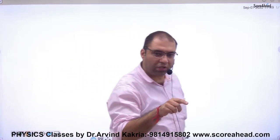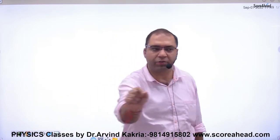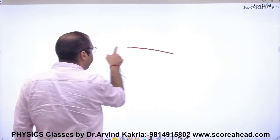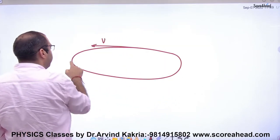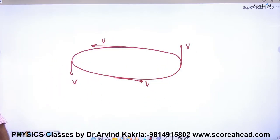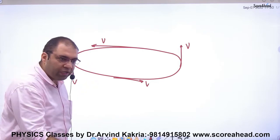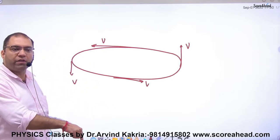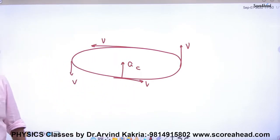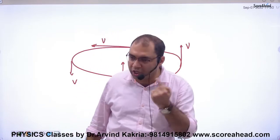In uniform circular motion, a body moves in a circle and its speed does not change — the speed remains constant. However, the direction of velocity changes continuously. This direction change is caused by centripetal acceleration, which changes the direction of the velocity vector without changing its value.